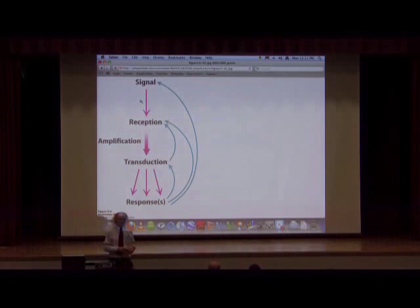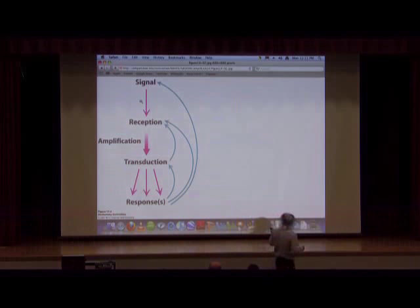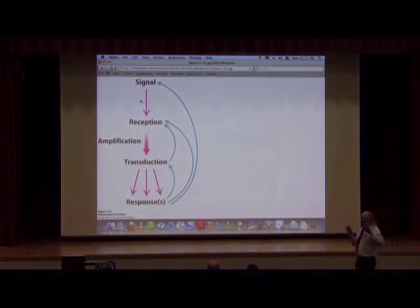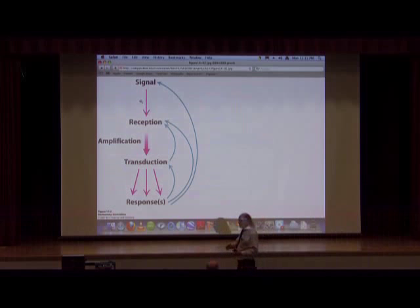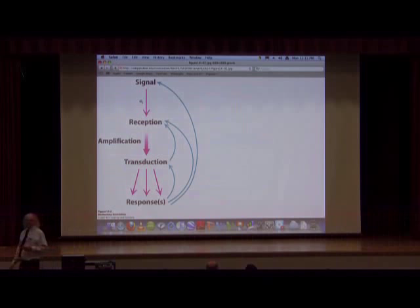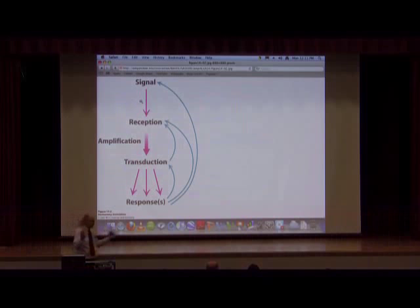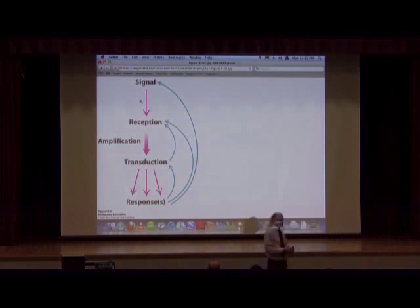After reception, something has to happen. For all the types of signaling we'll be talking about in this class, the signaling molecule never gets inside the cell — it stays outside, binds to the protein in the cell membrane, causes changes in the structure of that membrane protein, and those changes are somehow communicated inwards. There are some signaling systems, particularly steroid hormones, that can cross the cell membrane and act inside, but the ones we're talking about here do not.